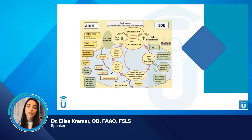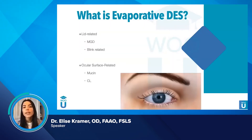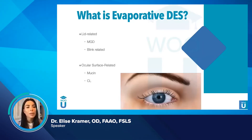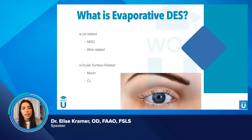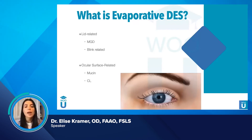So, what is evaporative dry eye syndrome? It could be lid-related — in which case you're talking about meibomian gland dysfunction, also abbreviated MGD — it could be blink-related, ocular surface-related involving the mucin layer, or contact lens-induced.